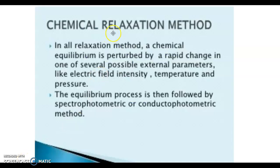The next method is chemical relaxation method. In this, chemical equilibrium is perturbed by a rapid change in one of several possible external parameters like electric field intensity, temperature, and pressure. The equilibrium process is then followed by spectrophotometric or conductometric methods. Here we are concentrating on the color change during the reaction or the conductance, that is the mobility of ions and number of ions produced in the reaction.